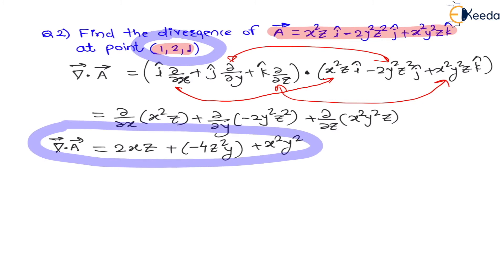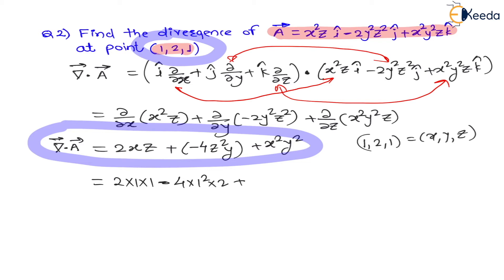They are asking to put the point (1, 2, 1), meaning x=1, y=2, z=1. Therefore it becomes 2·1·1 minus 4·1²·2 plus 1²·2², which is 2 minus 8 plus 4, equal to minus 2. Therefore the divergence of vector a at that point is equal to -2.